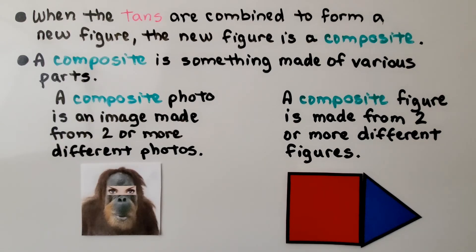When the tans are combined to form a new figure, the new figure is a composite. A composite is something made of various parts. A composite photo is an image made from two or more different photos. A composite figure is made from two or more different figures.